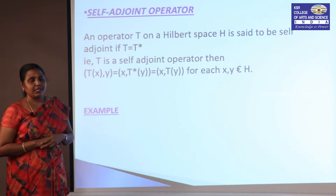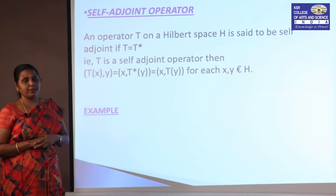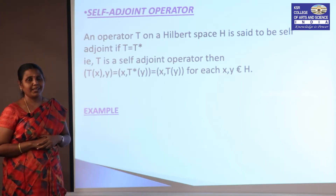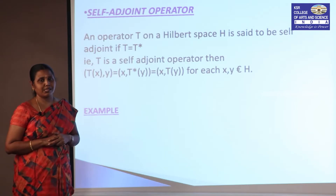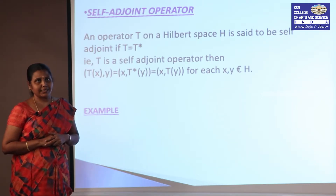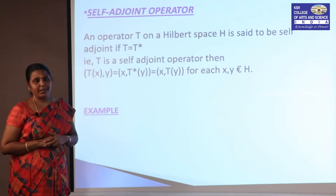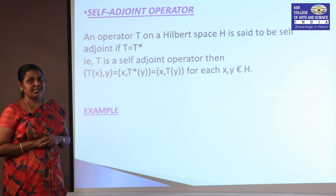Next we discuss the self-adjoint operator. A self-adjoint operator satisfies T = T*. This can be expressed in inner product form as: ⟨x, Ty⟩ = ⟨T*x, y⟩, which can be replaced as ⟨Tx, y⟩.